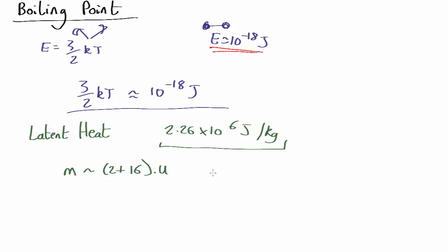You divide one kilogram by this to work out how many molecules are present. Then you divide the latent heat by the number of molecules and get the bond energy: about 10 to the minus 20 joules.